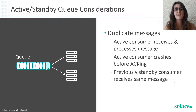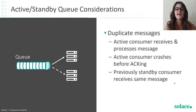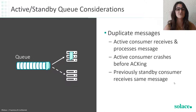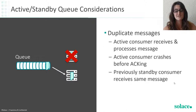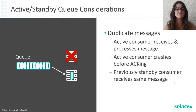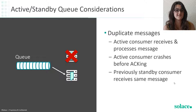Another consideration is duplicate messages. This actually applies to both an active standby and our competing consumer case. Think about this: your active consumer receives and processes a message. Before it acknowledges that message, it crashes or disconnects from Solace. The previously standby consumer now becomes active, receives that exact same message, and is going to process it again — and hopefully this time will be able to send the acknowledgement back to the Solace instance to delete it from the queue. But note, because the originally active instance received and processed that message, you will have duplication of processing. To account for this, you may want a unique identifier in your message or some other way of identifying messages uniquely so you can ensure you don't process duplicate messages.